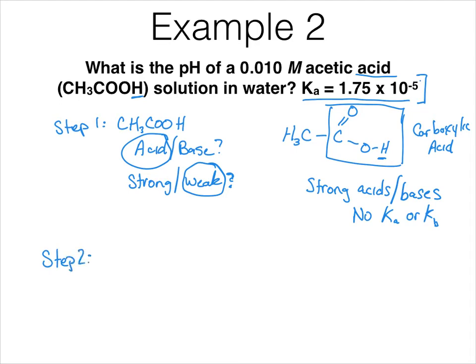So step two, we have to write out the reaction that is happening with water. So I have acetic acid plus water. And we've already decided that it's an acid. And remember that acids give up their protons. So the water is going to act as a base. It's going to take that proton, leaving me with H3O+, plus the acetate ion, CH3COO-.